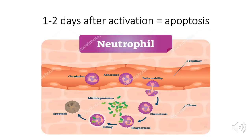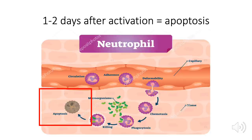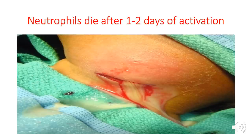The problem with neutrophils is that one to two days after they are activated, they will undergo apoptosis — programmed cell death. Every time there is pus on a wound, it means something has died for you. So stop dying for the person who doesn't love you back, and start living for the cells which are dying to keep you alive.